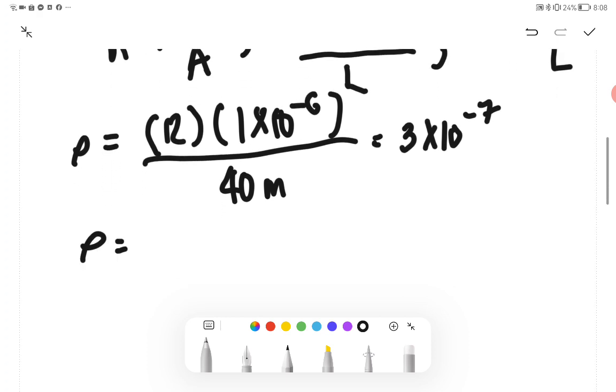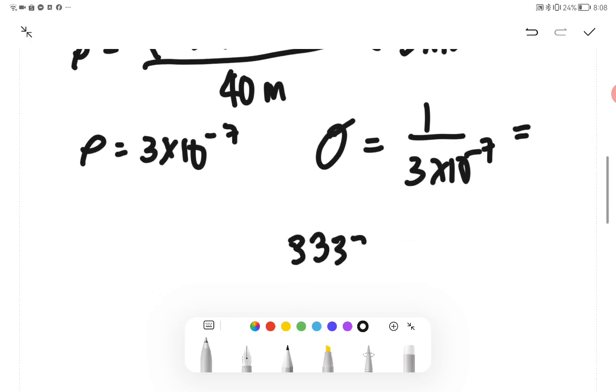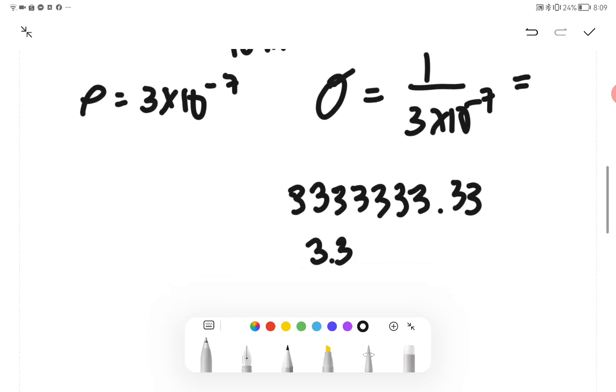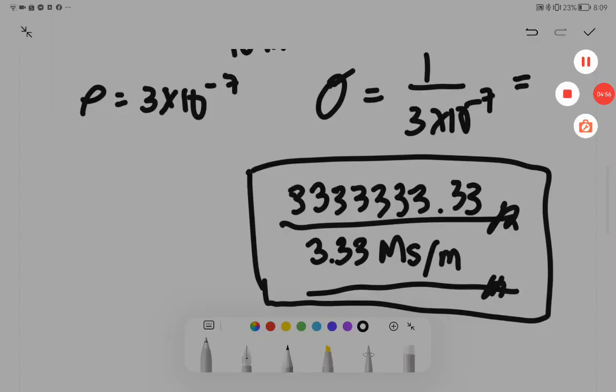So our ρ is 3 times 10 raised to negative 7. Therefore our conductivity σ is equals to 1 over 3 times 10 raised to negative 7, which is equivalent to 3333333.33, which equals 3.33 MS per meter. So that will be our final answer.